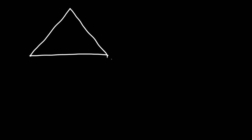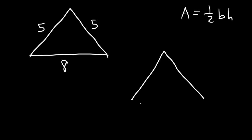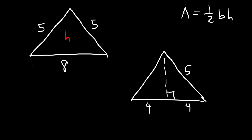Now let's say if we have an isosceles triangle — that's where two sides are congruent to each other — and let's say the base is 8 units long. Find the area of this triangle using the same formula: A equals one-half base times height. I'm going to redraw the triangle. Because it's an isosceles triangle, we can split it right in the middle. So this side is 4 and the other side is 4 as well, and this side is 5. Our goal is to find the height of the triangle, because if we could find the height, then we can easily find the area.